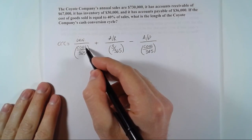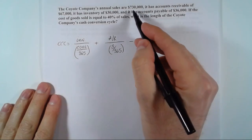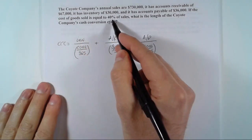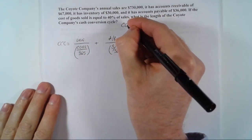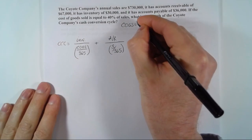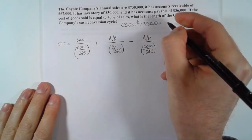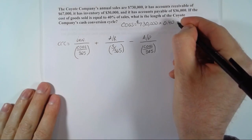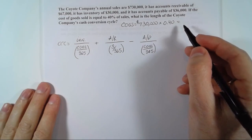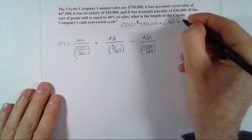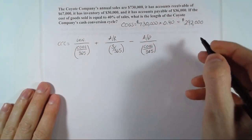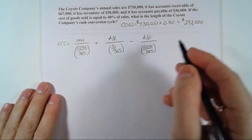We need to find cost of goods sold from the problem. Sales are $730,000 and COGS is 40% of sales, so cost of goods sold equals $730,000 × 40% = $292,000.